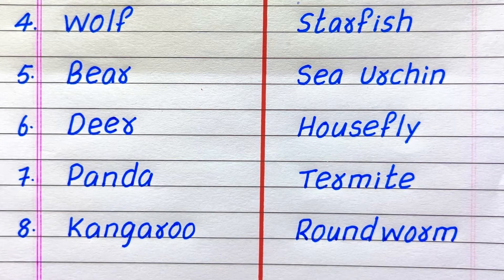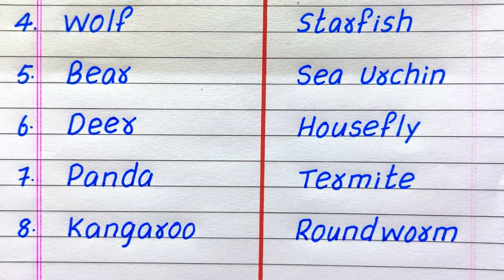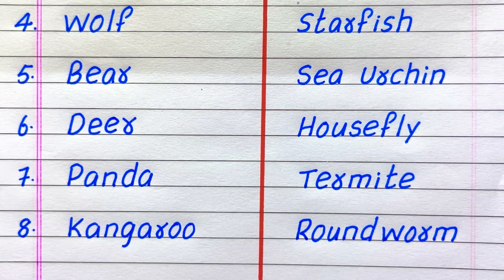Fourth example of an invertebrate animal is starfish, fifth sea urchin, sixth housefly, seventh termite, eighth roundworm.